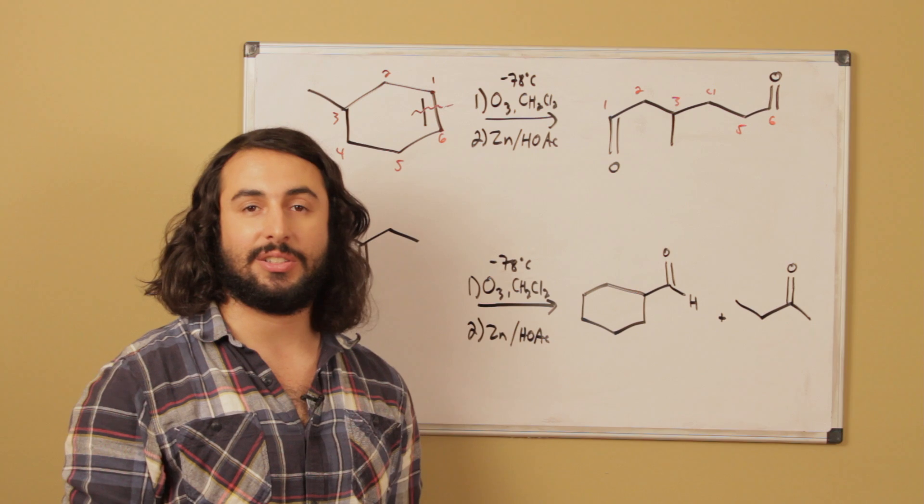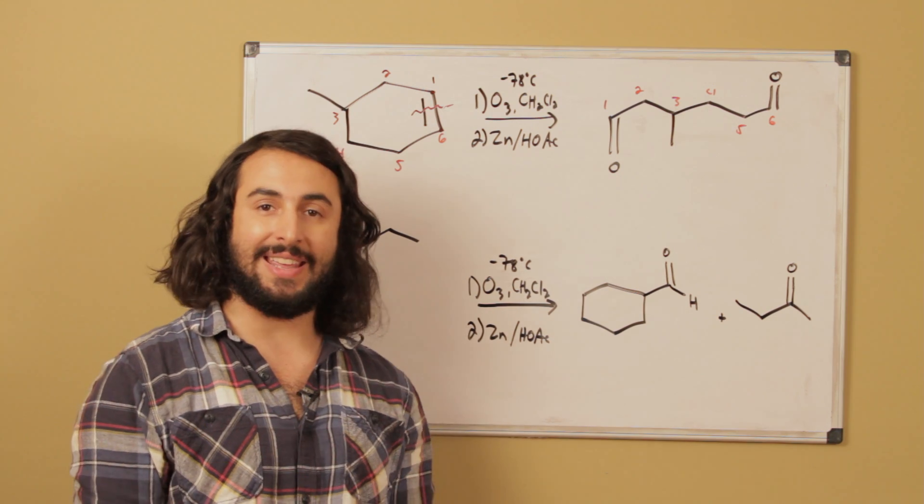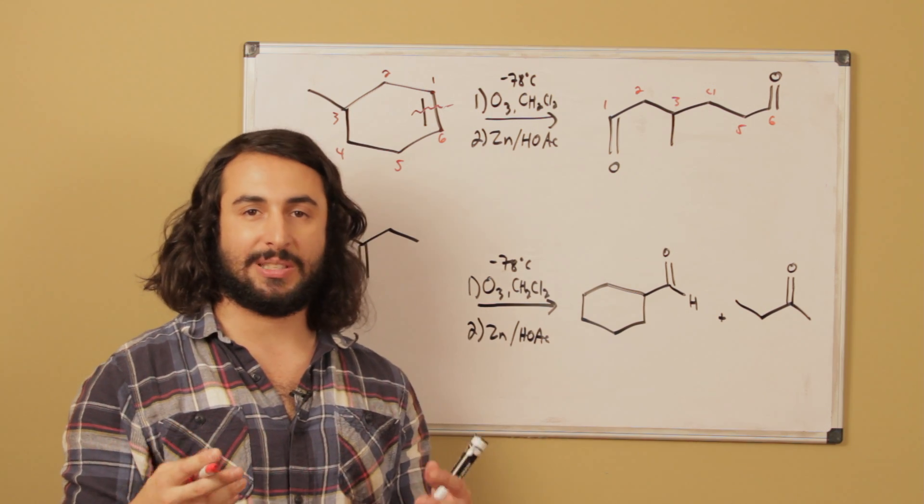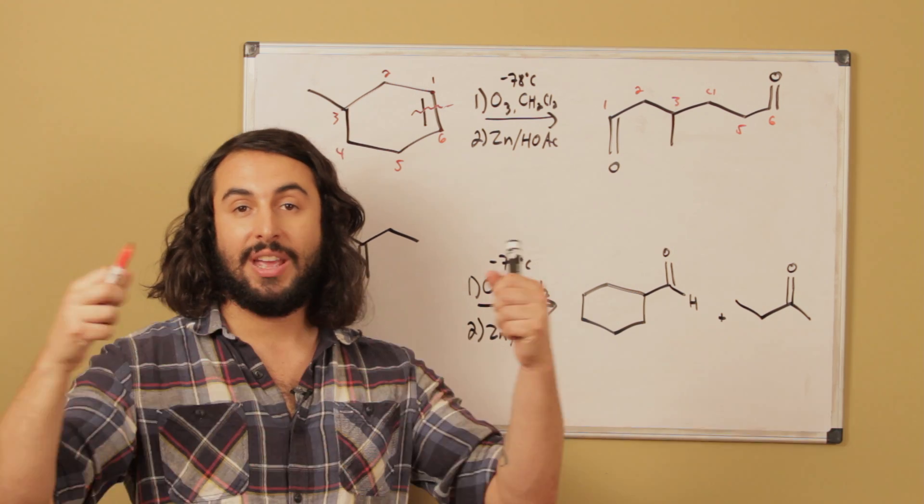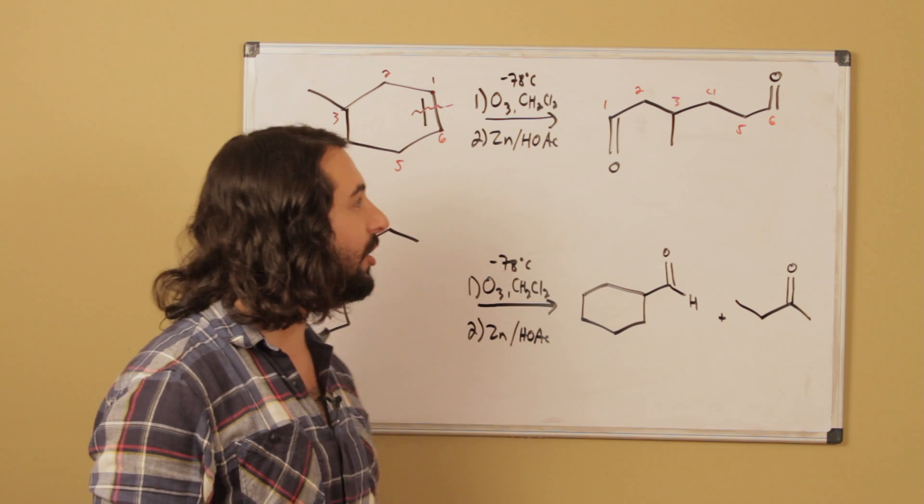So that's what's interesting about doing ozonolysis on a cycloalkene. Instead of what we would expect, pulling it apart into two molecular fragments, we've actually just turned a cyclic molecule into a linear molecule. So that's a very useful transformation.